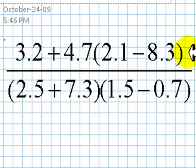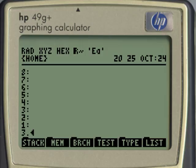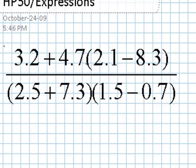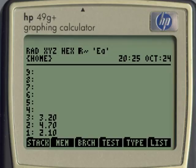Let's enter those numbers on the stack: 3.2, enter, 4.7, enter, 2.1, enter. There is not an operation that you can perform yet with those three numbers. 8.3, enter. Now we can start operating. We can request a subtraction from the calculator, and a multiplication with 4.7, and an addition with 3.2. We have evaluated the numerator of our expression.